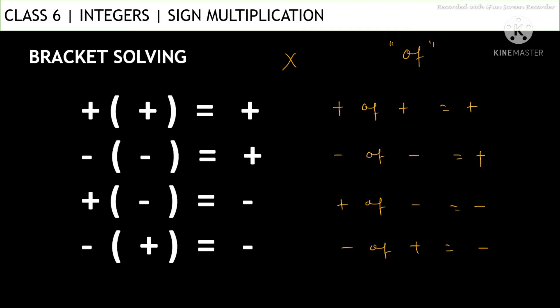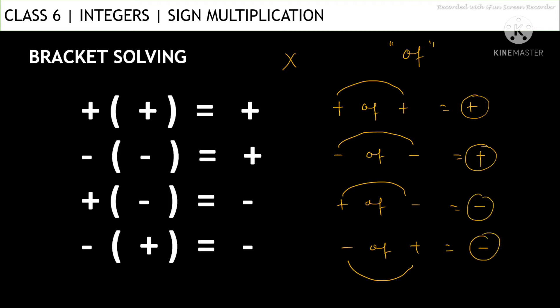Plus of plus means plus into plus, which is plus. Minus into minus is also plus. In the other cases, plus into minus or minus into plus — in both cases you get minus. So: positive of positive is positive, negative of negative is also positive, and positive of negative or negative of positive always gives a negative result.